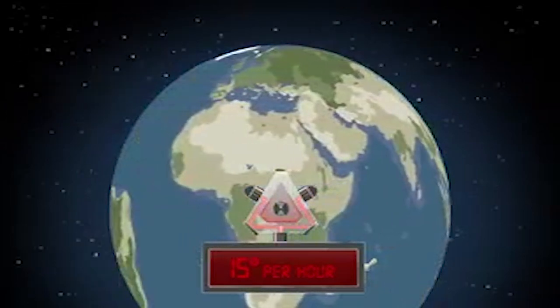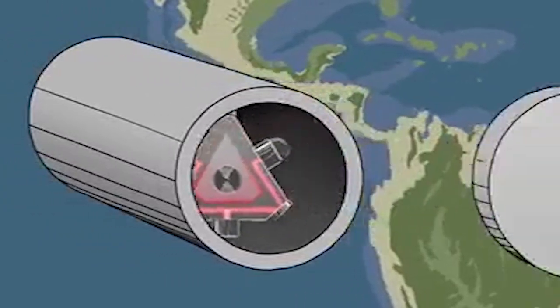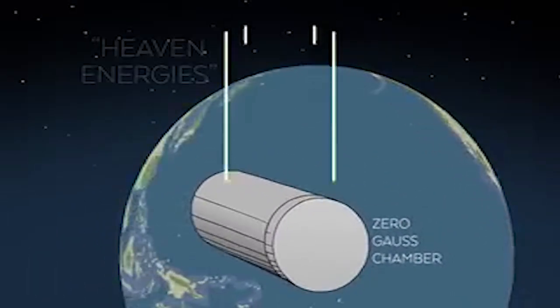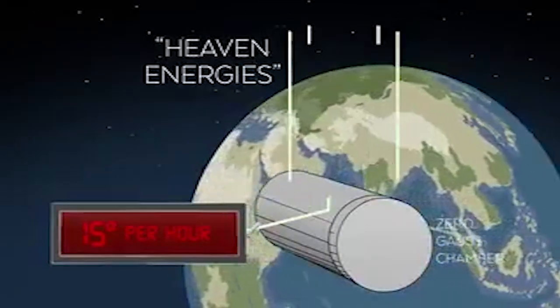So the next thing that we set out to do was to encase the fiber optic gyro in what's called a zero gauss chamber, to see if we could actually shield the energies being generated by the heaven. And we were unsuccessful with that, unfortunately.